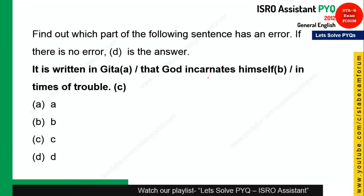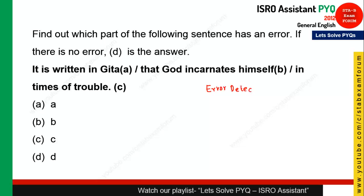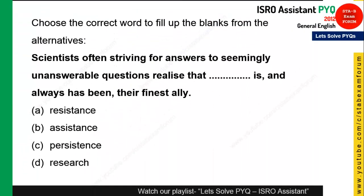This type of question is called error detection — a very important category in the ISRO exam, with two to three questions from error detection. The statement is 'it is written in Gita'. As you know, 'Gita' is a proper noun, so 'the' should come in front of it. The corrected sentence is 'it is written in the Gita that God incarnates himself in times of trouble'. Option A is the right answer.